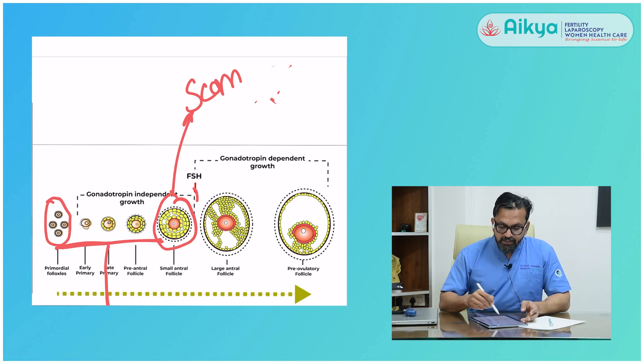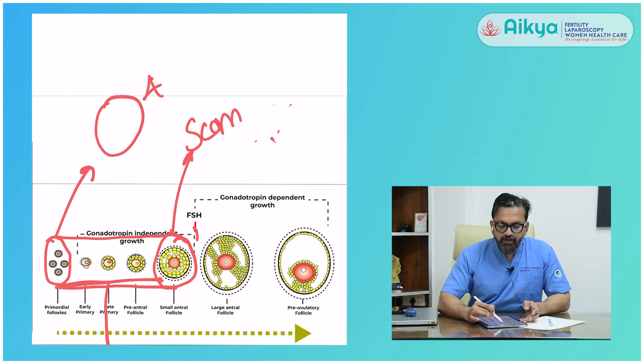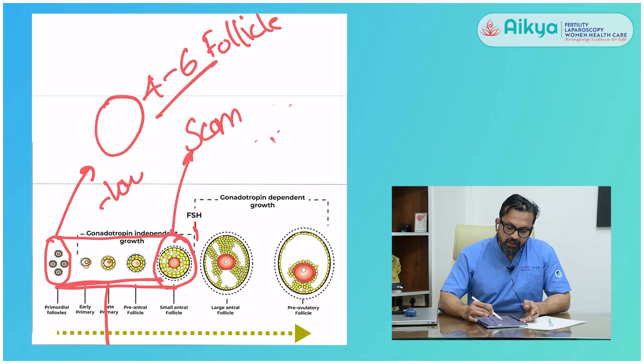Why is this stage — from primordial follicle to small antral follicle — important? Because generally in an ovary, if it's a normal responder, we will have around 4 to 6 follicles which are seen and ready to develop. When it comes to a low responder, where the AMH is low or the number of eggs seen is low, and we want the numbers to be better, this is the stage we need to work on. If we can develop these follicles, then the number of eggs available for IVF will be more and success will be better.